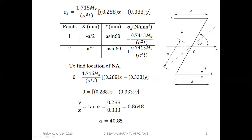At point 1 the stress is compressive and at point 2 it is tensile. To find the neutral axis, set sigma_z equal to zero: 0.288x − 0.333y = 0, giving y/x = tan(α). So α equals 40.85° with respect to the XX axis — this is the position of the neutral axis.